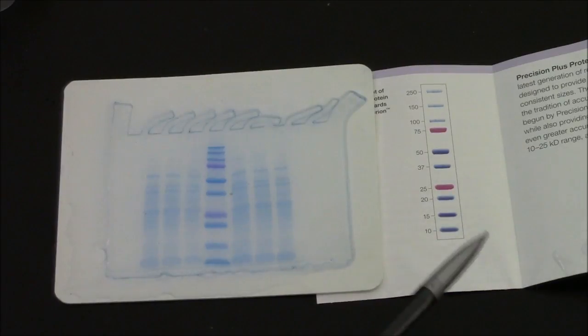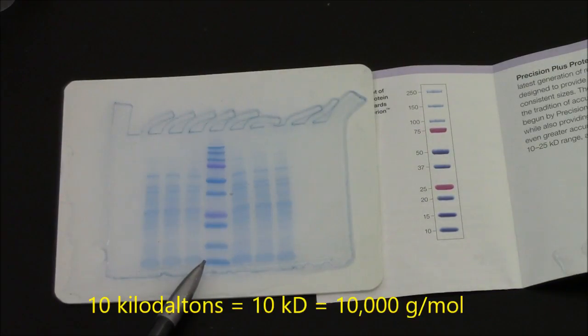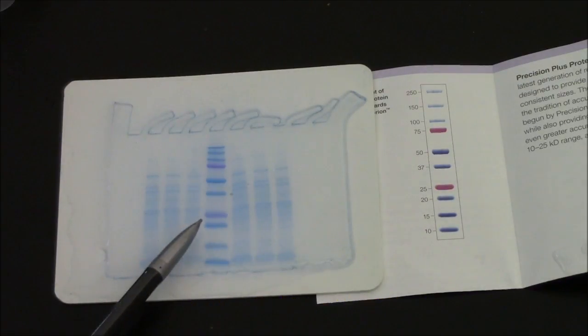Interpretation of the markers is here. The smallest band is 10,000 grams per mole, 10 kilodaltons. 15, 20, 25.